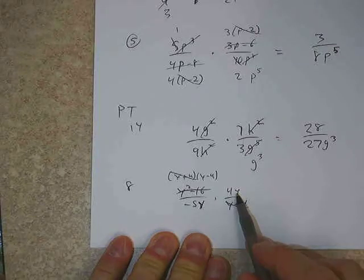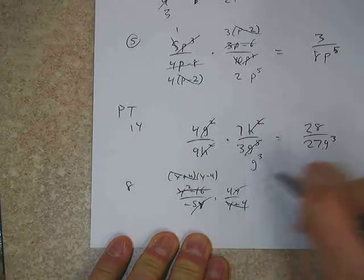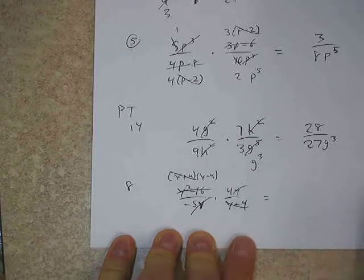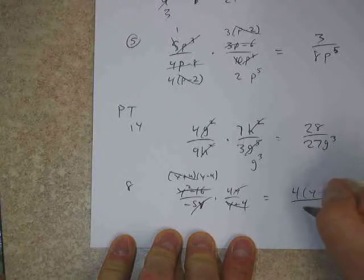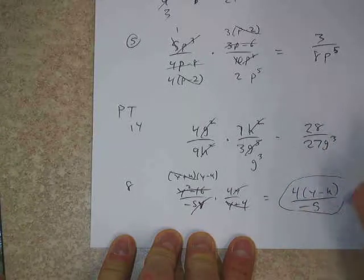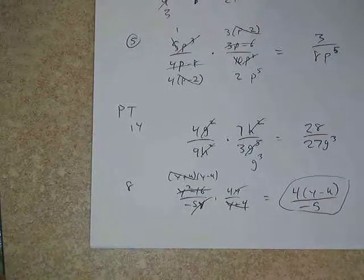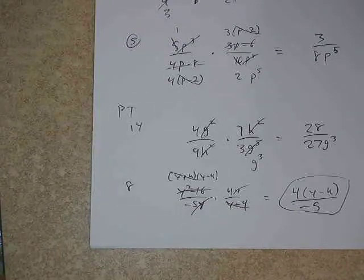And with that, we can see that we have a y plus 4 and a y plus 4. Those can go. One thing that people generally miss here is that we have a y here and a y here. Those can go. We'll get rid of the y's. And the 4 and 5 of course don't reduce. So on top we'd have 4 times y minus 4. And on the bottom we'd have negative 5. And so that right there would be our final answer for number 8.